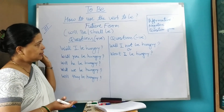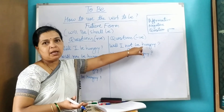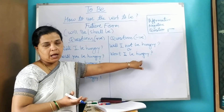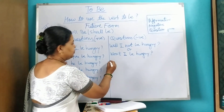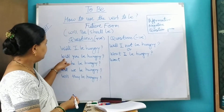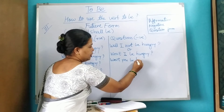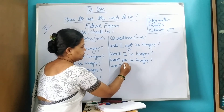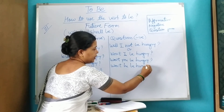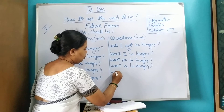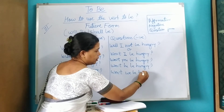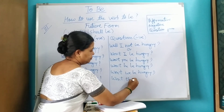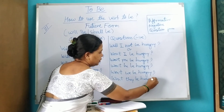We can also form negative questions. Full form: 'Will I not be hungry?' Or using the contracted form: 'Won't I be hungry?' Similarly: 'Won't you be hungry?' 'Won't he be hungry?' 'Won't she be hungry?' 'Won't we be hungry?' 'Won't they be hungry?'